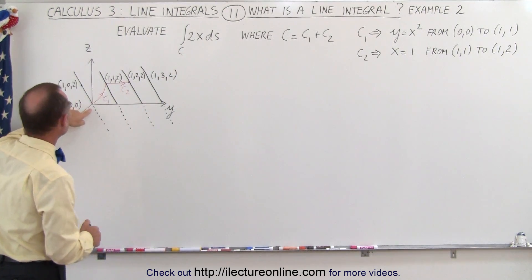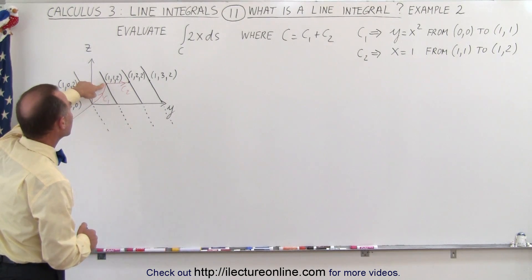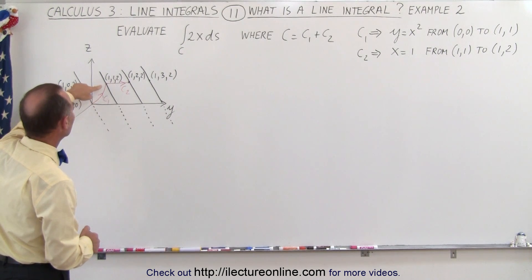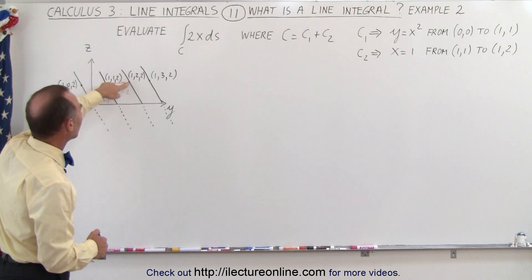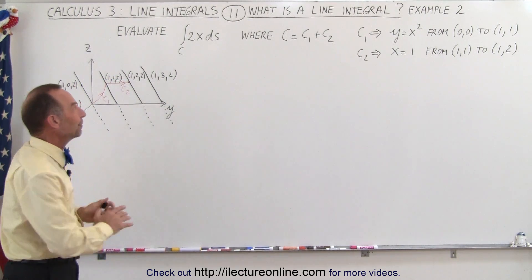The first line is from the origin to this point right here, (1,1,2), and the second will start at (1,1,2) and go to (1,2,2). So what do we have here?